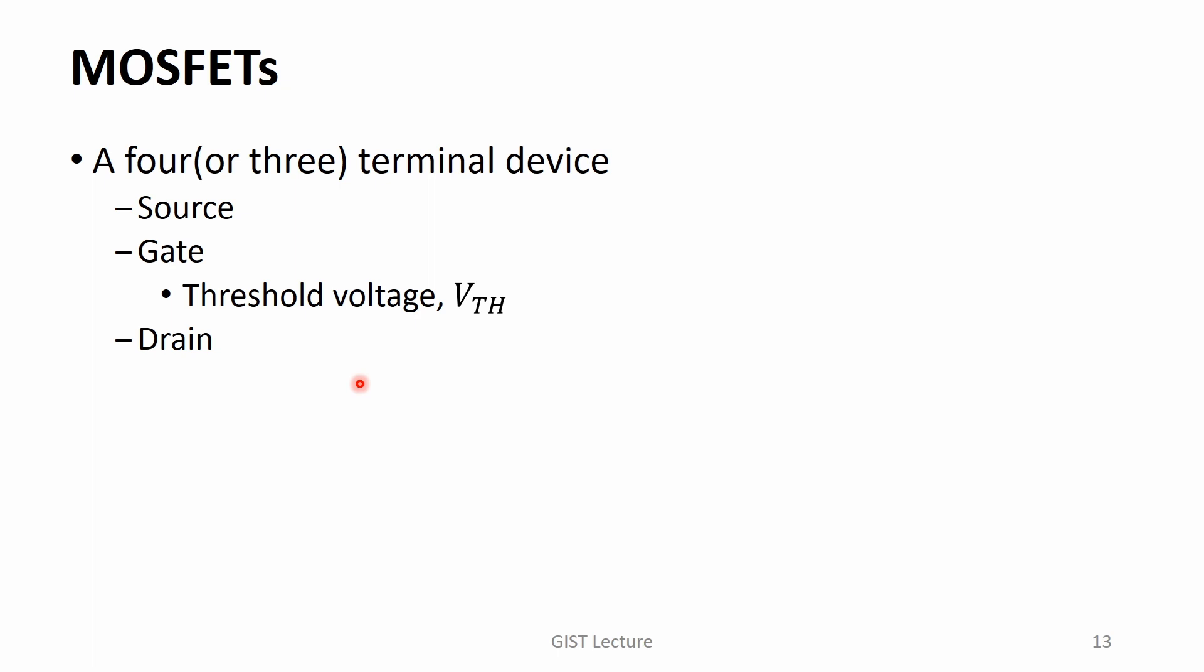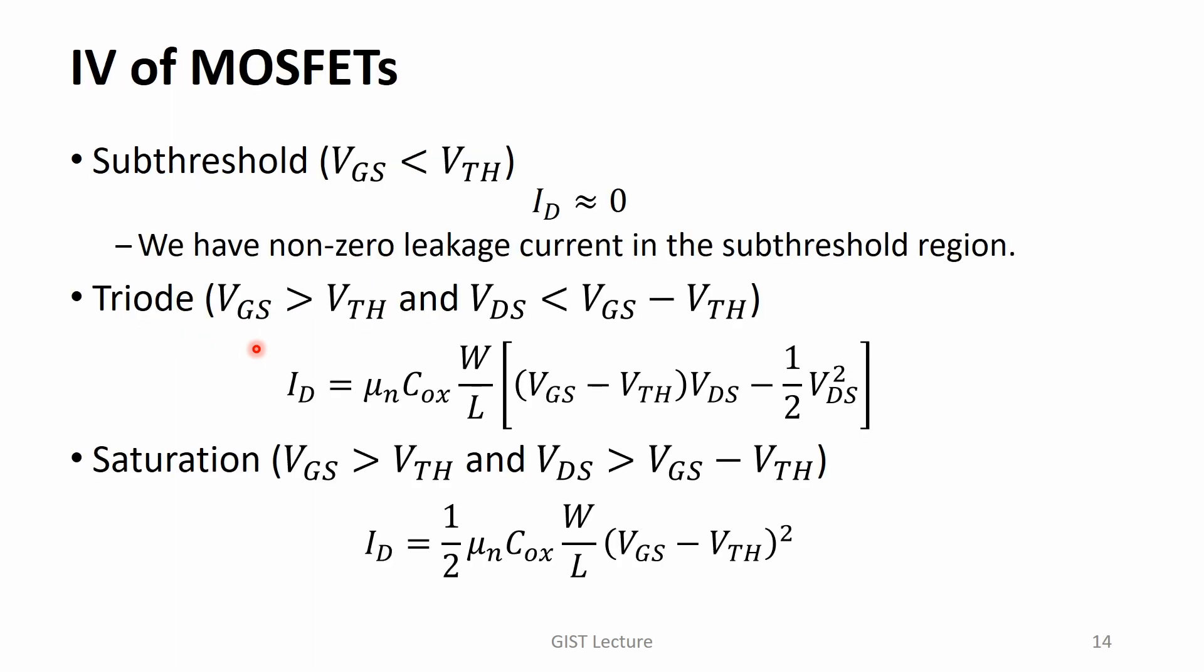In contrast to the diode having two terminals, MOSFETs have four or three terminals. The source terminals set the reference voltage for the device operation and it provides the charge carriers. The gate terminal controls the carrier density in the channel region. When the gate-to-source voltage is higher than the threshold voltage, the inversion layer appears. On the other hand, for a gate-to-source voltage lower than the threshold voltage, almost no carrier can be found in the channel region. By applying the drain voltage, we obtain the drain current.